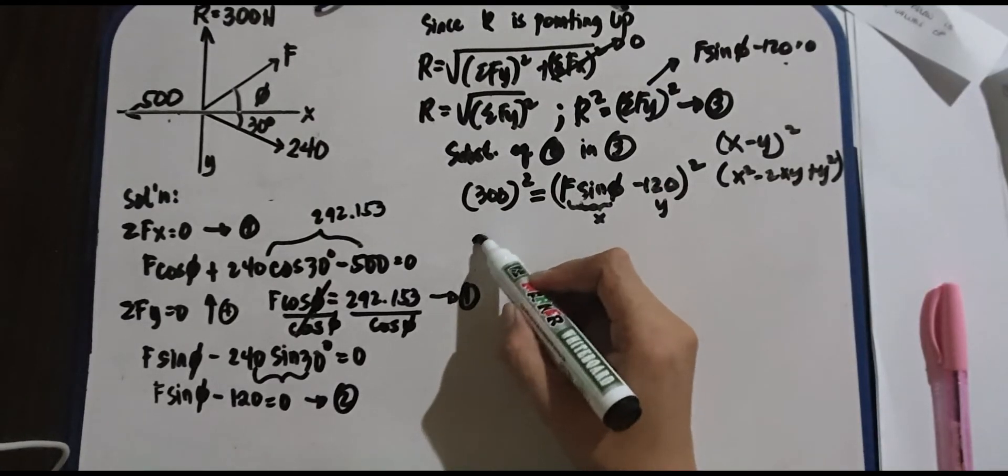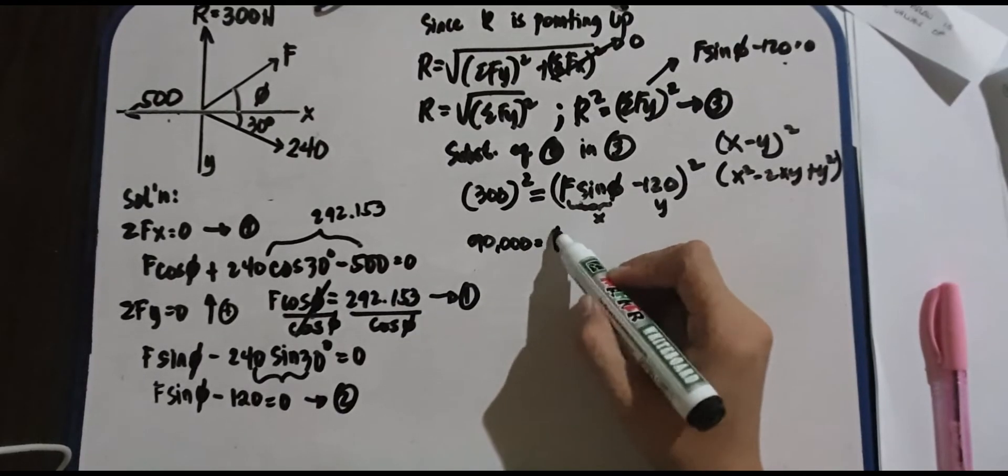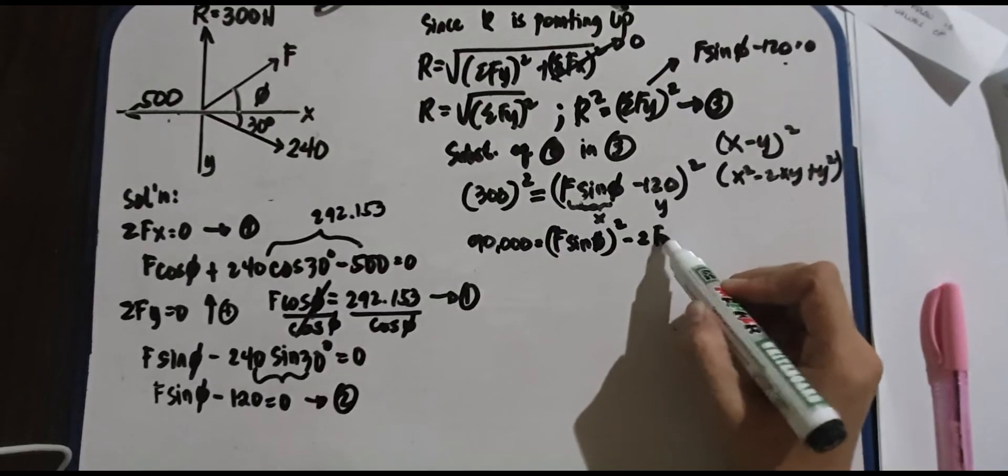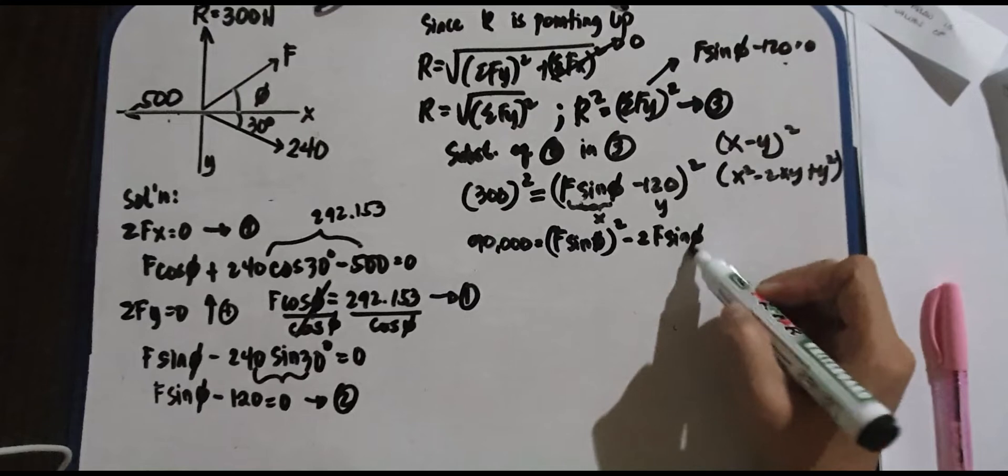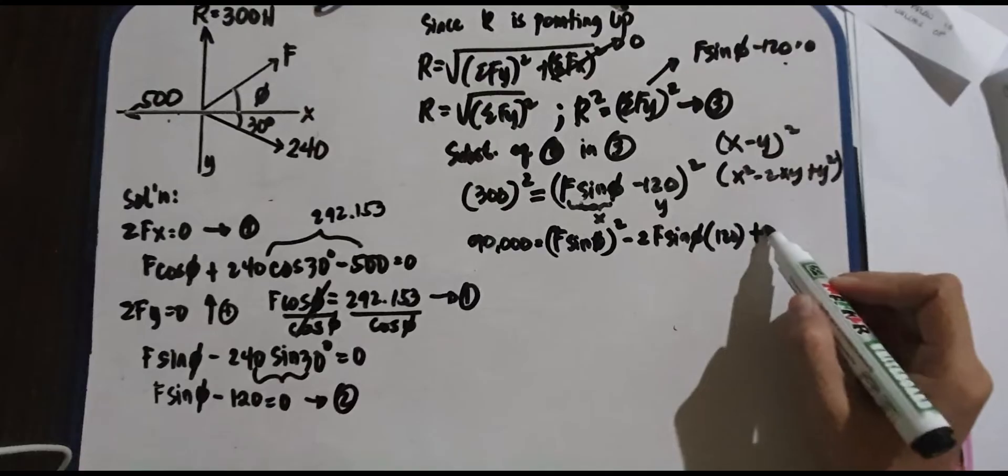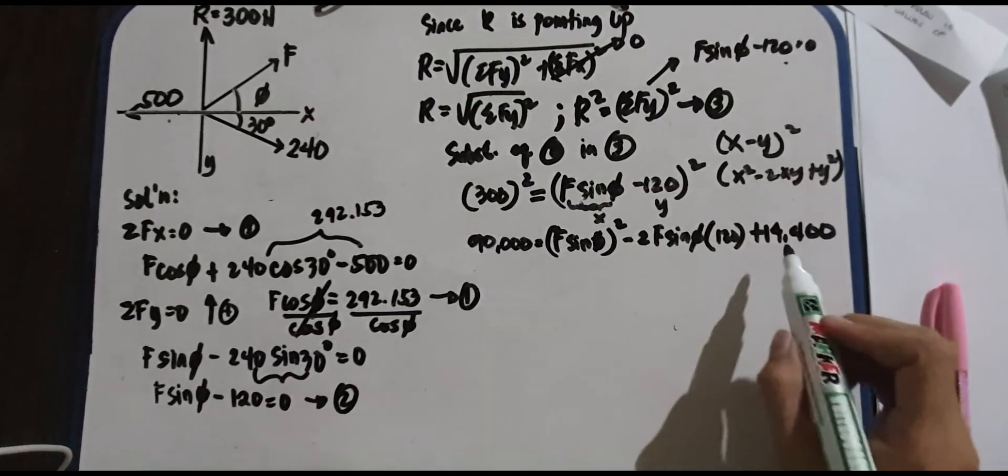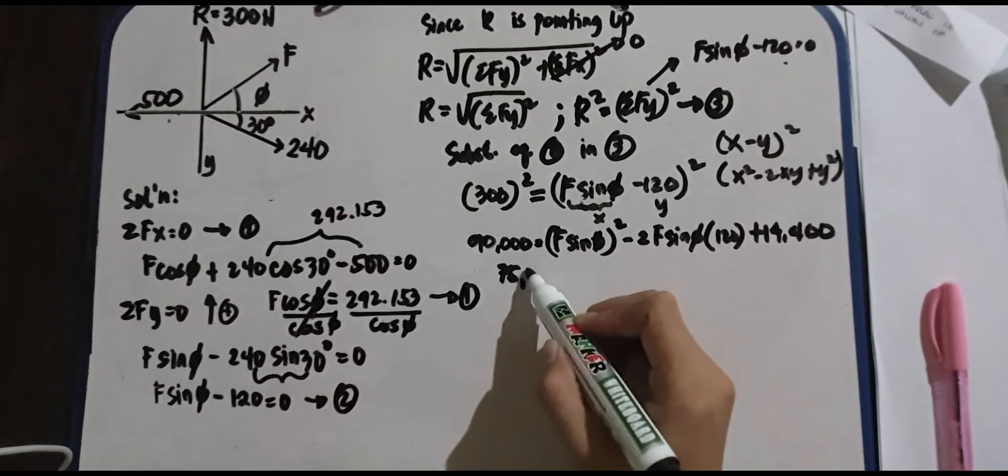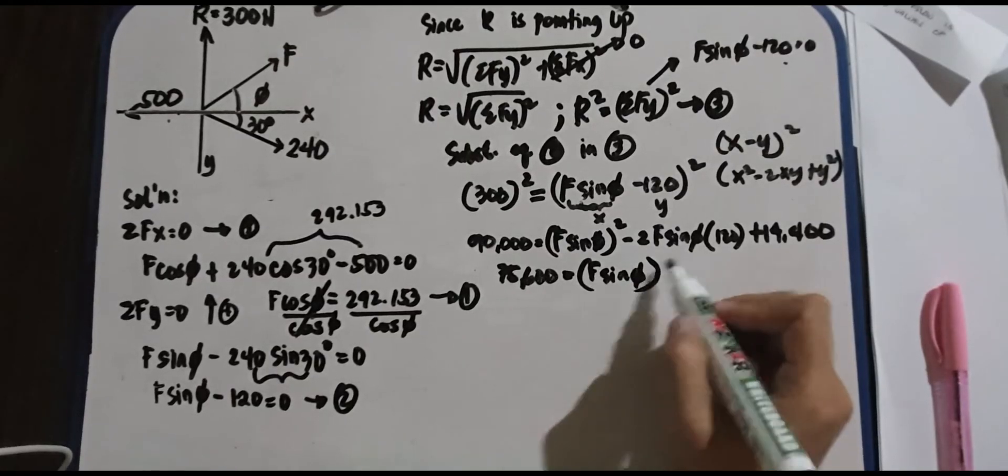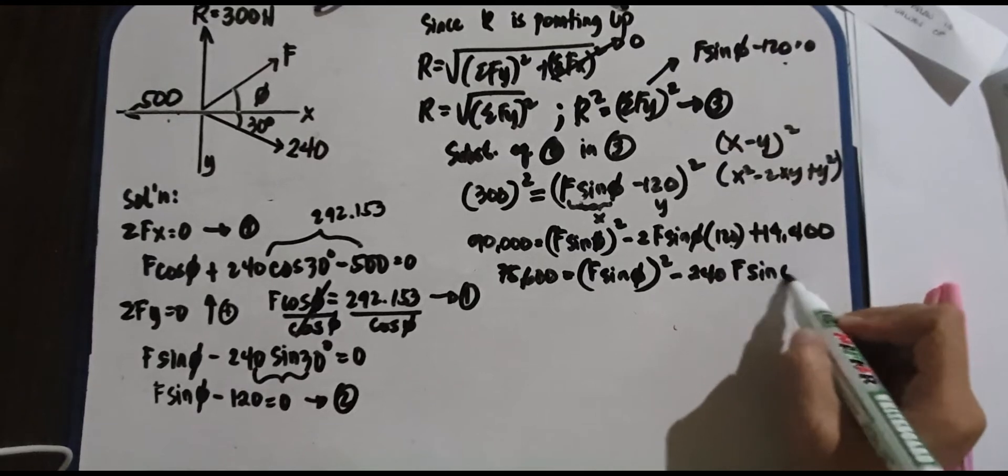300 squared, that is 90,000, equals we have F sin phi squared minus twice of F, because we have sine there, sin phi, and then Y which is 120, plus we have 120 squared is 14,400. So we have 90,000 minus 14,400, that is 75,600 equals we have F sin phi squared minus 2 times 120 is 240 F sin phi.